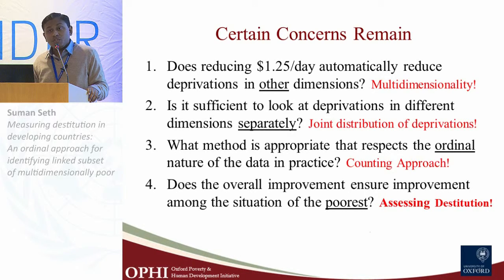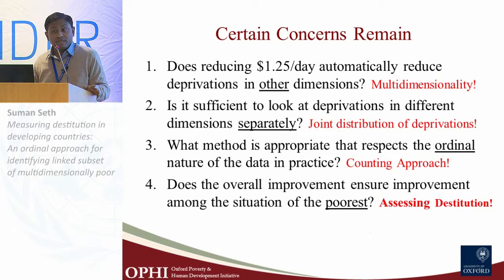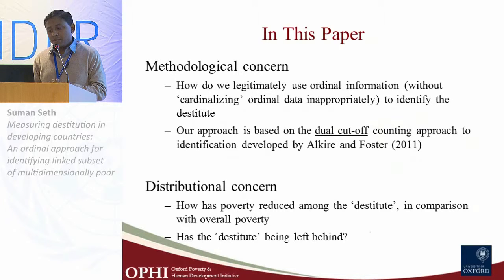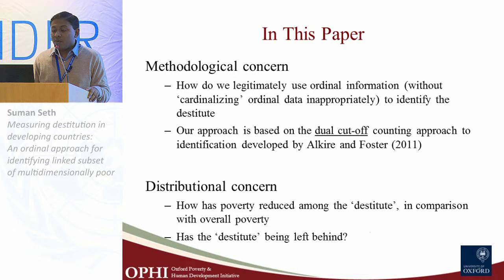In today's presentation, I will mostly focus on that final concern, building on the other three. Our approach is a multidimensional approach that takes into account the joint distribution of deprivations — looking at deprivations together rather than separately. We apply an accounting approach that respects the ordinal nature of dimensions. The main question is: how do we legitimately use ordinal information to identify the destitute? Our approach is based on Alkire and Foster's counting approach on multidimensional poverty measurement.